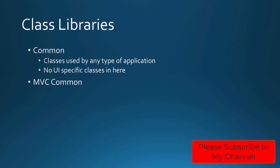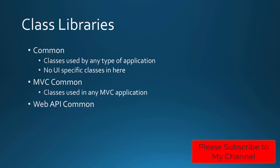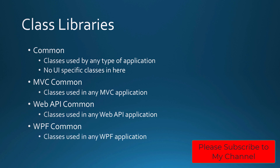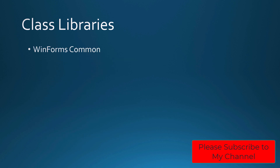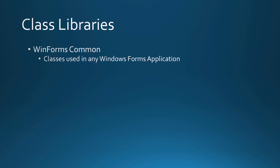An MVC common library holds classes used in any type of MVC application — maybe custom action filters. A Web API common holds classes used in any Web API application. A WPF common has classes used in any WPF application. A WinForms common has classes for any Windows Forms application. You're breaking things down into specific classes that work on a specific technology, or are generic and can be used across any of these application types.